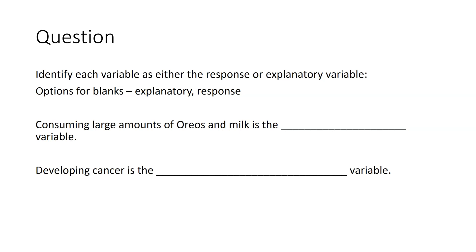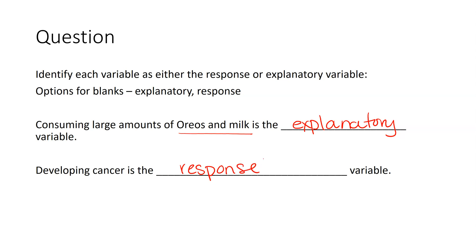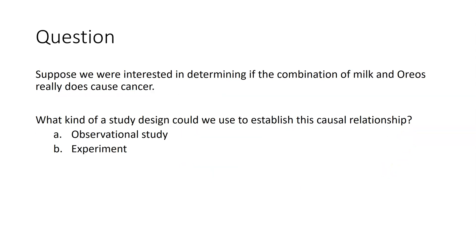Consuming large amounts of Oreos and milk is what the researchers believe might explain rates of developing cancer. Since we believe that consuming large amounts of Oreos and milk might explain developing cancer, we'll call this our explanatory variable. Developing cancer will be considered our response variable. Milk and cookies is the explanatory variable; developing cancer, thought to be in response to the explanatory, is our response variable.